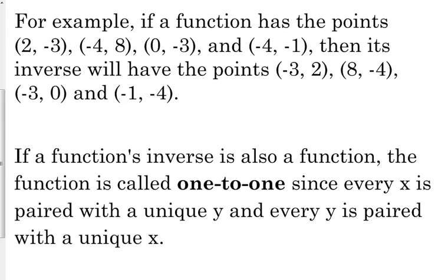Now we can talk about a special type of function called a one-to-one function. A one-to-one function exists when the function's inverse is also a function. That means every x is paired with a unique y, and every y is paired with a unique x. You know that for a function, every x can only have one y.